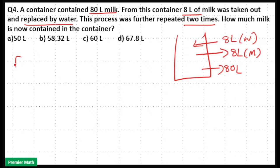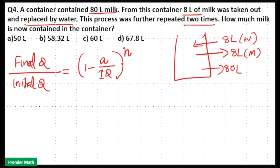So there is an equation: final quantity divided by initial quantity is equal to 1 minus amount removed or replaced divided by initial quantity, the whole raised to number of times the process repeated.